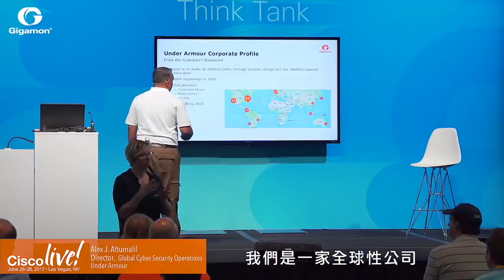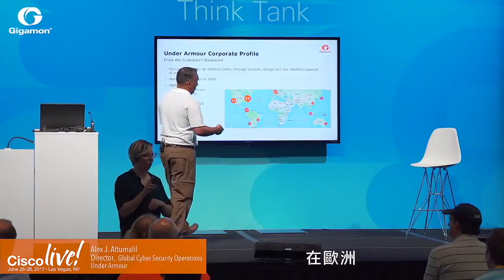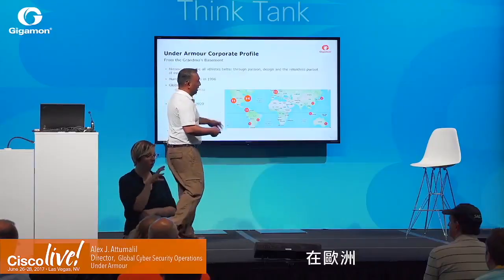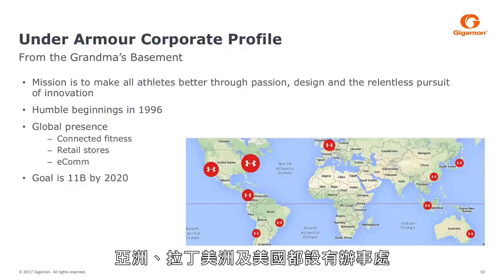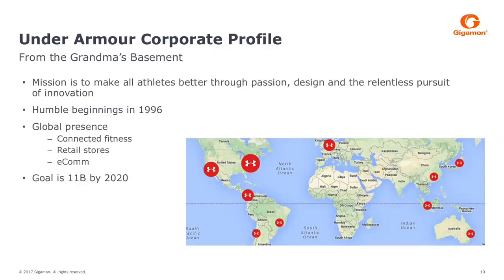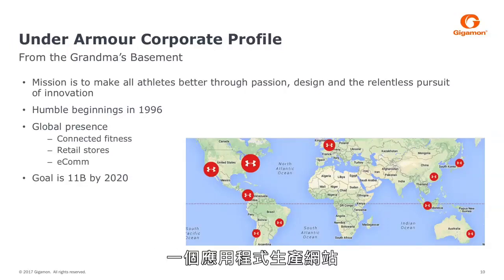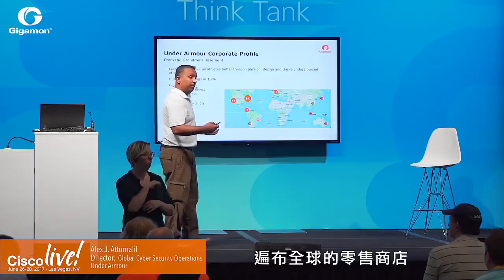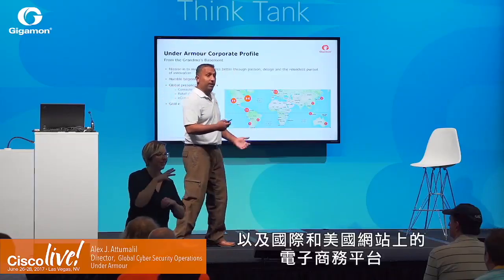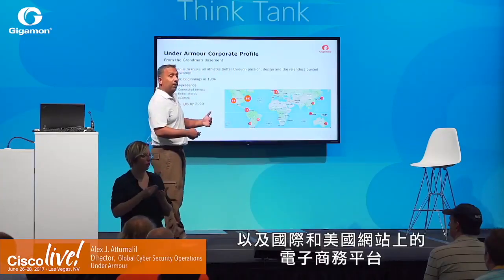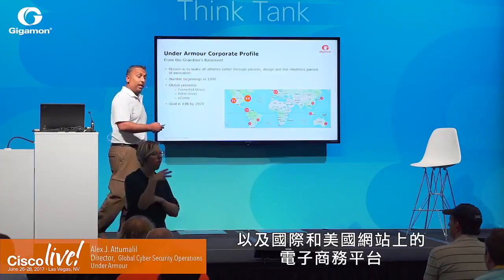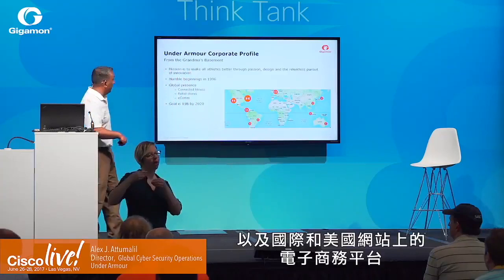Under Armour is a global company with offices in Europe, Asia, Latin America, as well as the United States. Their global presence includes Connected Fitness — the app manufacturing side — a bunch of retail stores all over the globe, as well as their e-commerce platform, both international and U.S.